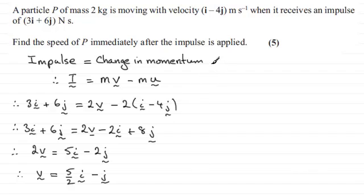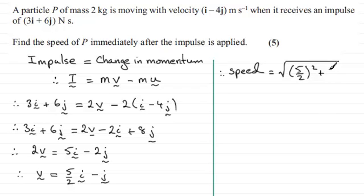Now we're just after the speed, so that speed is given by the magnitude of our velocity vector, which is going to be the square root then of the sum of the squares of the components. So you've got 5 over 2 all squared plus 1 squared, and that comes to an exact value of root 29 over 4, which is root 29 over 2. So that's the exact speed.